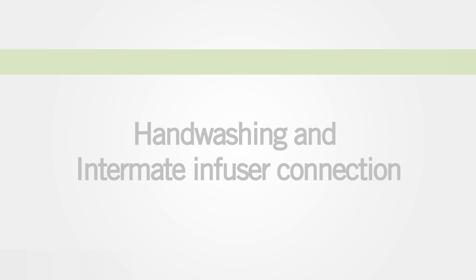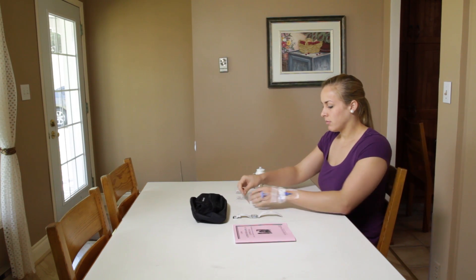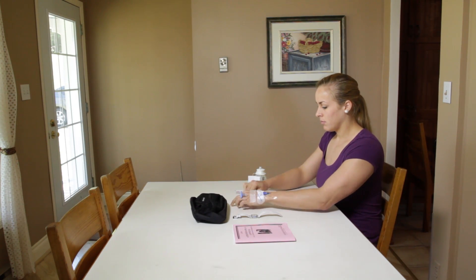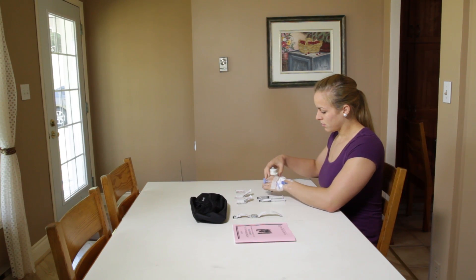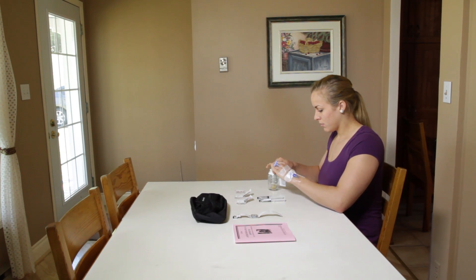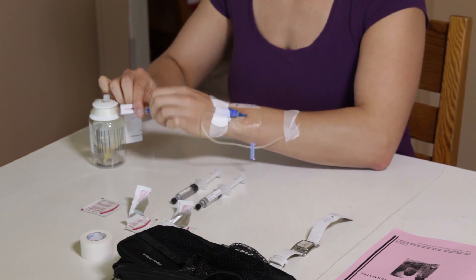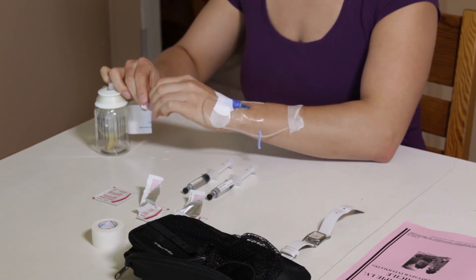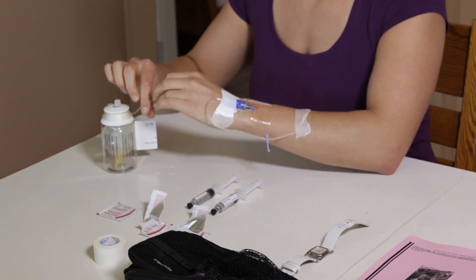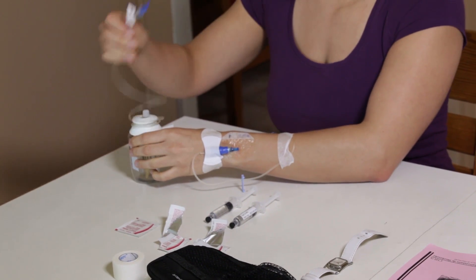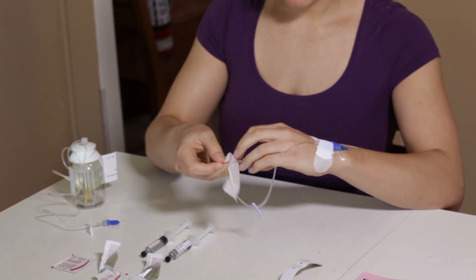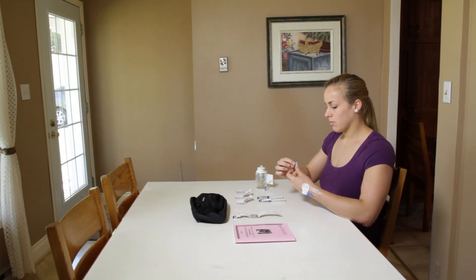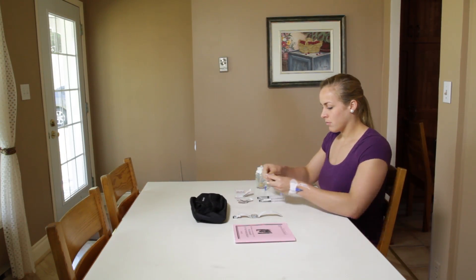Then sit down comfortably near the clean work surface and stretch out your arm. Open two alcohol swab packages. Open the infuser's tube clamp, wait until you see a drop of liquid, then close the tube clamp. Unroll the tubing. Remove the tape on the extension tubing from your intravenous catheter and hold the extension tubing in your hand.